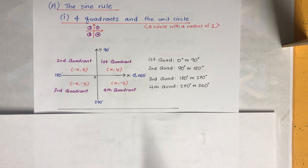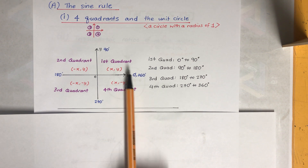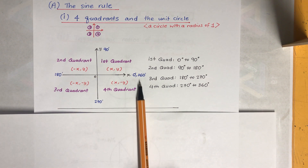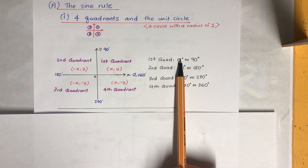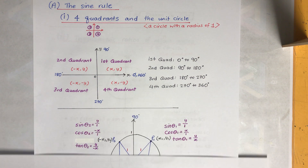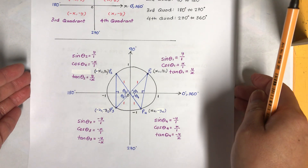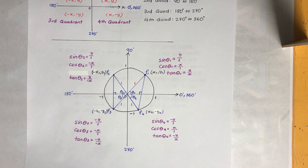Now we are dealing with trig, which involves angles, so it starts from the x-axis on the right-hand side at zero degrees, then 90, 180, 270, and back to 360. That sums up what the unit circle angles are about.